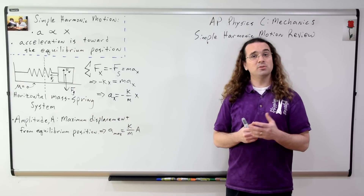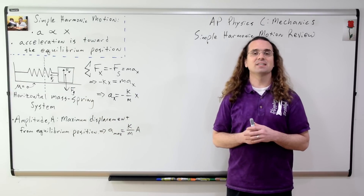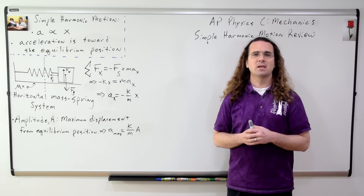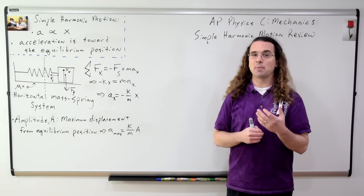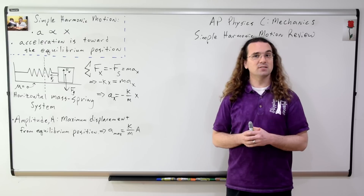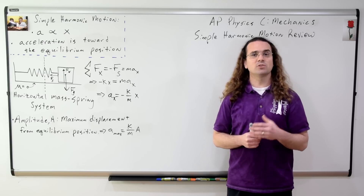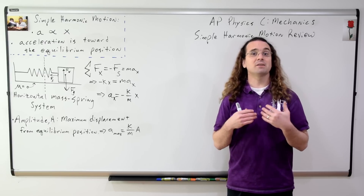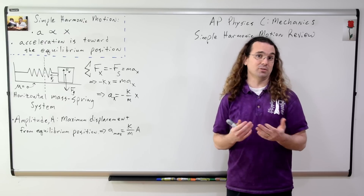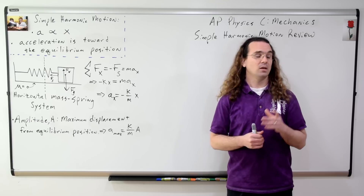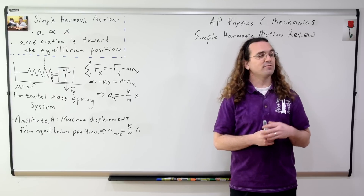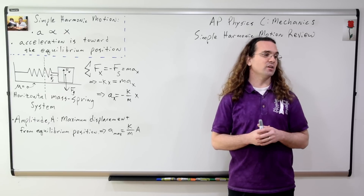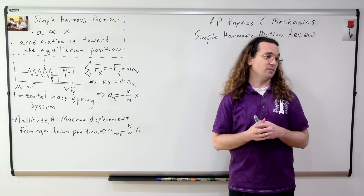Because amplitude is defined as the maximum displacement from the equilibrium position, the maximum acceleration of a mass-spring system is equal to the spring constant divided by the mass, all multiplied by the amplitude. Billy, what is the equation for instantaneous acceleration in terms of position?